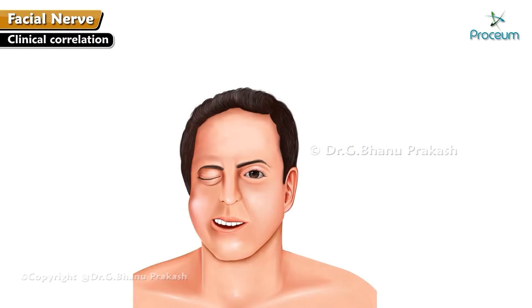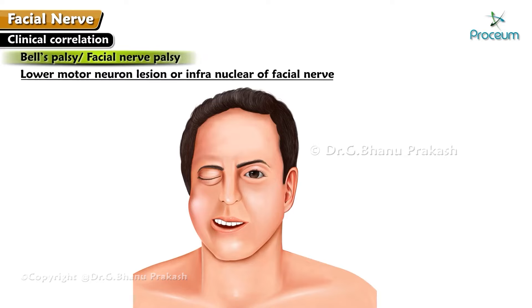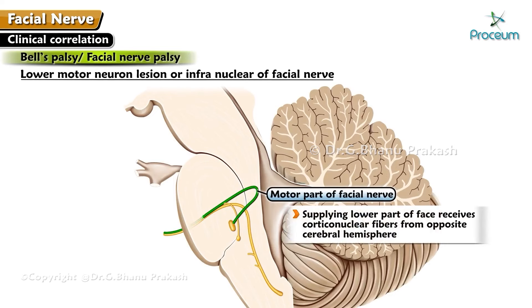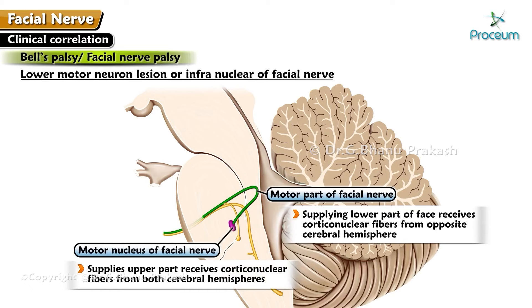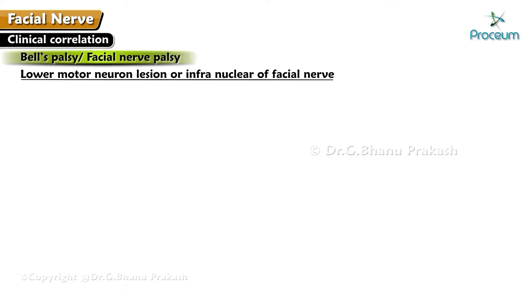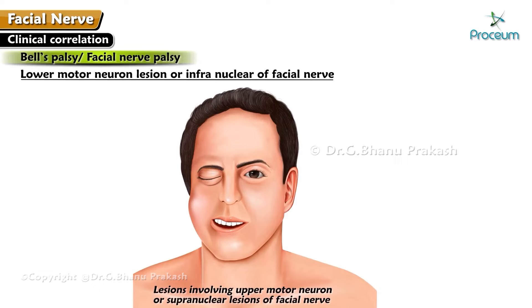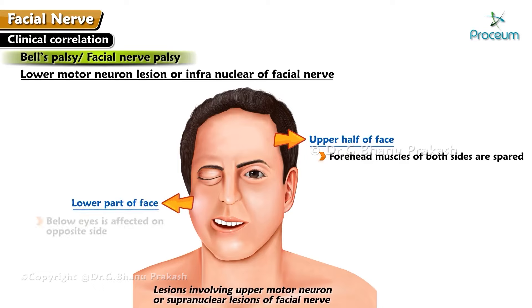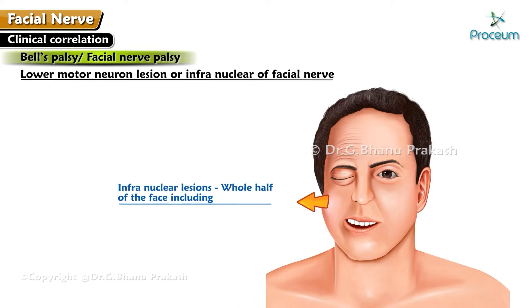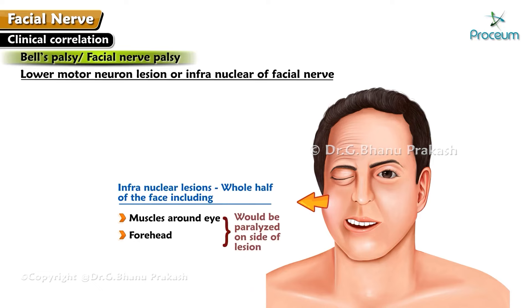Clinical correlation: Bell's palsy, or facial nerve palsy, is a lower motor neuron or infranuclear lesion of the facial nerve. The motor part of the facial nerve supplying the lower part of the face receives corticonuclear fibers from the opposite cerebral hemisphere, while the part of the motor nucleus supplying the upper part of the face receives corticonuclear fibers from both cerebral hemispheres. This explains why in upper motor neuron or supranuclear lesions, the upper half of the face — the forehead muscles of both sides — are spared, and only the lower part of the face is affected on the opposite side. In infranuclear lesions, the whole half of the face, including muscles around the eyes and forehead, is paralyzed on the side of the lesion.